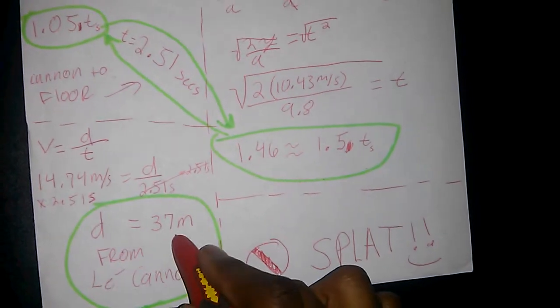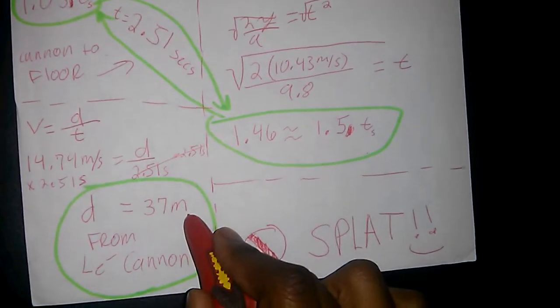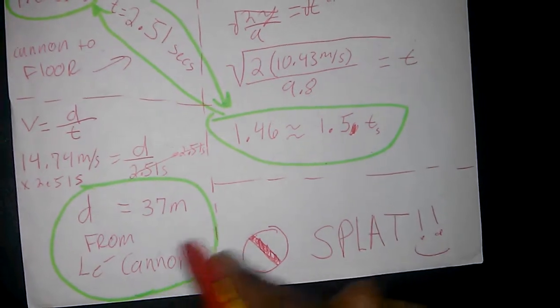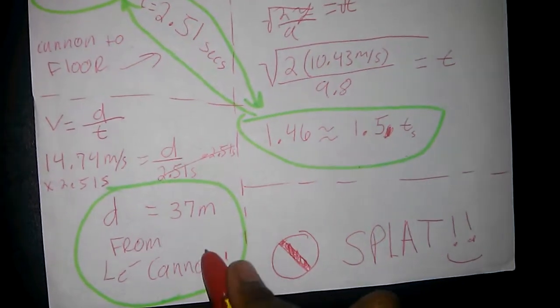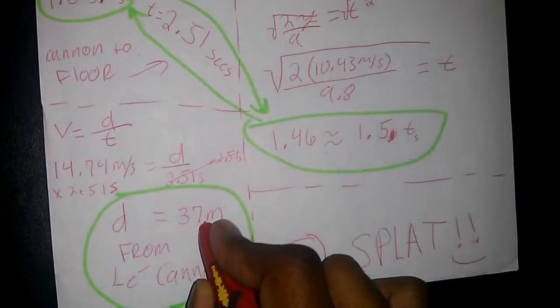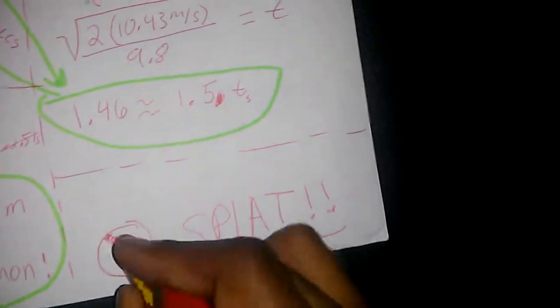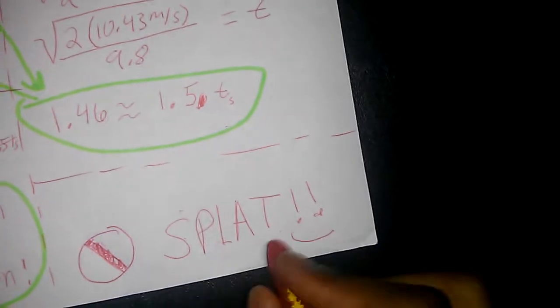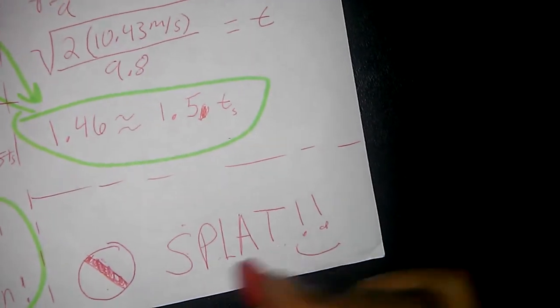And now you got, for your distance, is 37 meters from the cannon to the mat. So you want to tell the ringmaster 37 meters is what the Great Flyinski needs so he does not go splat. We don't want splat. No splat. See you next time.